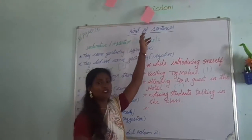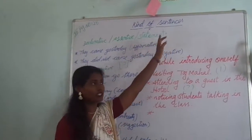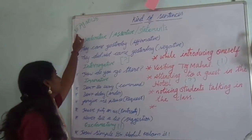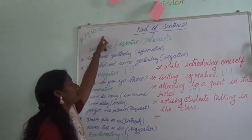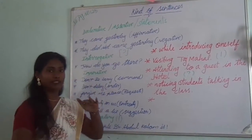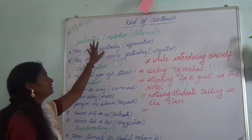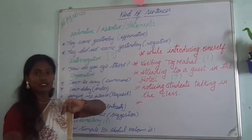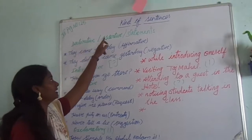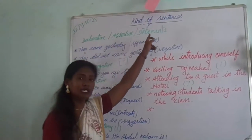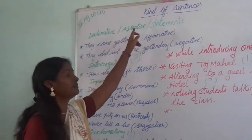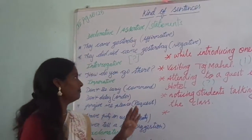We shall see what are the kinds of sentences in English. It is given in the third term book English, page 125. So it is just for their level, 600 level. And here there are four kinds of sentences. One is declarative. The other name for declarative is assertive, and the other name is statement. So declarative, assertive, and statement are all the same.